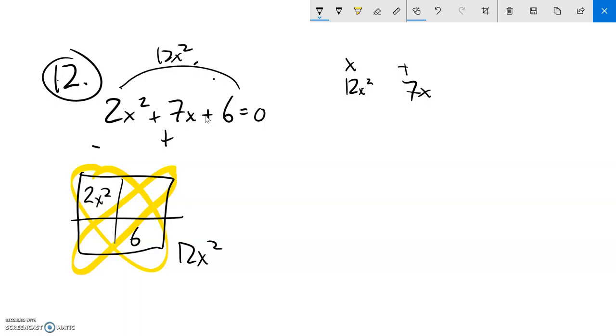So things that multiply to 12: 1 and 12, 2 and 3 is not correct, 2 and 6, 3 and 4. There they are right there, 3 and 4. That multiplies to 12 and adds to 7.